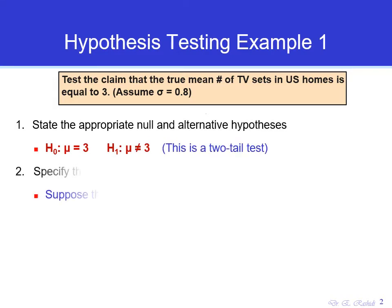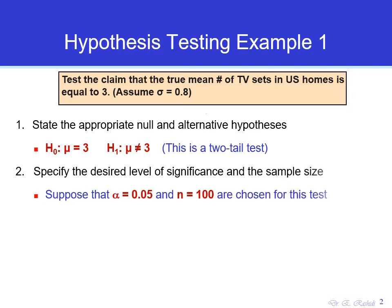The next step is to specify the desired level of significance and the sample size. Suppose we want to test these hypotheses at a 5% significance level, so we set alpha equal to 5%. And suppose we set the sample size equal to 100 — we want to take a sample of 100 households and compute the average number of TV sets they have, then use that evidence to test these hypotheses.